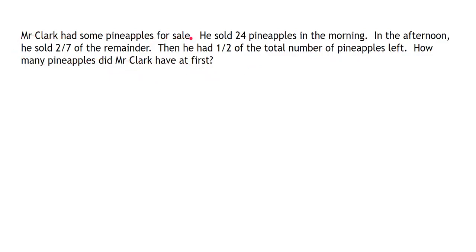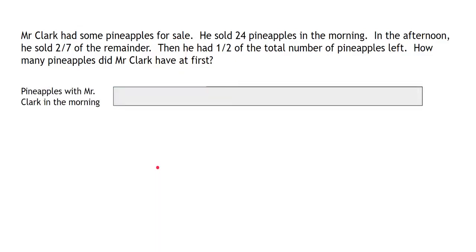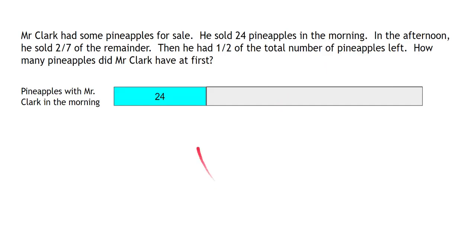Mr. Clark had some pineapples for sale and we do not know how much, so what we could do is come up with a big box to represent the total number of pineapples that Mr. Clark had for sale. The next piece of information is he sold 24 pineapples in the morning, so we randomly select some box and mark it as 24. In the afternoon he sold two-sevenths of the remainder — this is the remainder portion.